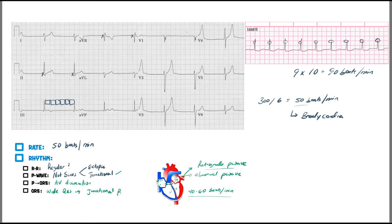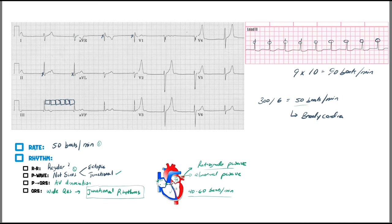Wide QRS complexes in certain leads can be associated with a junctional rhythm. So I'm definitely leaning junctional: the rate is within 40 to 60, there's no upright P wave in lead two, no inverted P in AVR, there could be a retrograde P hidden in the QRS, there is AV dissociation, and the QRS is wide. The cause is usually damage to the SA node so the AV node must take over.